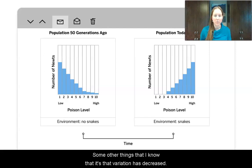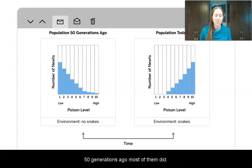Some other things that I notice is that variation has decreased. 50 generations ago, the rough-skinned newts had all of the different types of poison levels all the way from 1 to 10. Now the graph starts at poison level 4. So none of the rough-skinned newts have very low poison, even though 50 generations ago, most of them did.